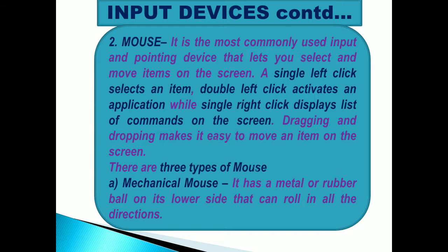The mouse is another commonly used input and pointing device that lets you select and move items on the screen. A single left click selects an item, double left click activates an application, while a single right click displays a list of commands. Dragging and dropping makes it easy to move an item on the screen. There are three types of mouse: mechanical mouse, which has a metal or rubber ball on its underside that rolls in all directions.